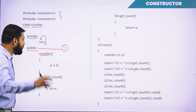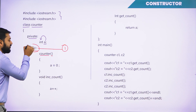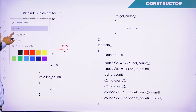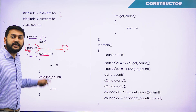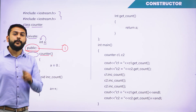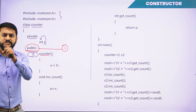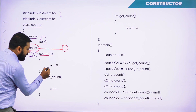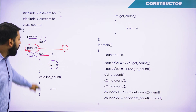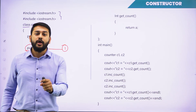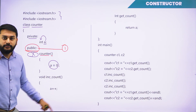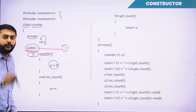The second point: it is under the scope of public. And point number three: I don't have any return type here. I should have given void, int, or double — but for a constructor, there is no return type. Inside the constructor, I am initializing the value of 'a'. Whenever this constructor is called, the initialization of the variable will happen automatically.